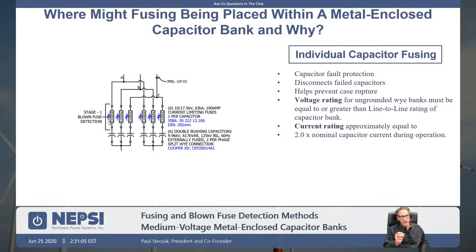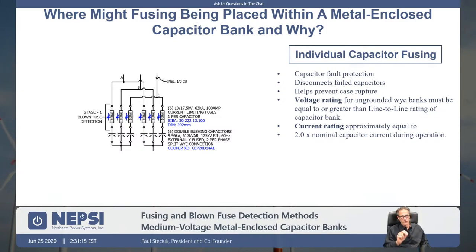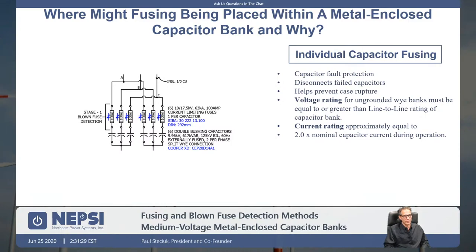We're fusing the capacitors to prevent case rupture during internal faults — that's really one of the key reasons to do it. Remember, capacitor fusing, branch fusing, and main incoming fusing are not installed for the purpose of overload protection. I often hear engineers talk about providing overload protection for capacitor banks with current limiting fuses — it's just not possible and not a good practice.